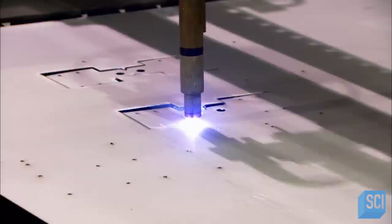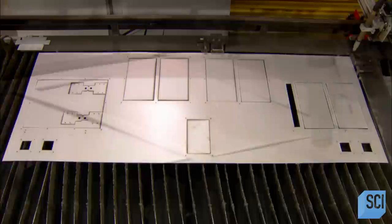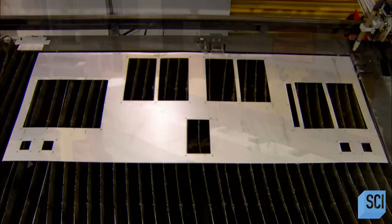They start with the front of the board. A computer program guides a plasma torch to cut out precisely sized slots in a sheet of high-grade steel. The slots will house the illuminated numerals and indicators like arrows.